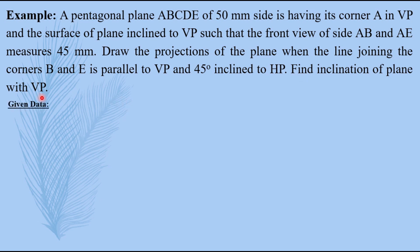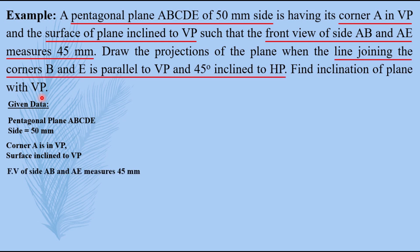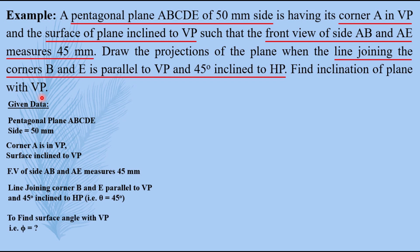Write the given data first. Pentagonal plane ABCDE of side 50mm — if only one dimension is mentioned, by default it is a regular pentagon. Corner A is in VP, surface of plane inclined to VP. Front view of sides AB and AE measures 45mm. Line joining corners B and E is parallel to VP and 45 degrees inclined to HP, so theta equals 45 degrees. We have to find the surface angle with VP, that is phi.